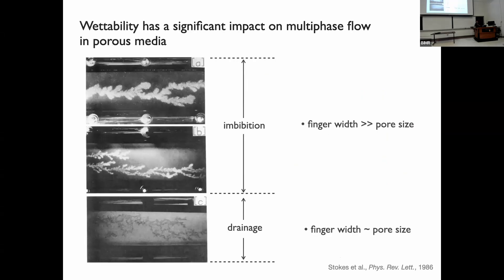Classical studies on the impact of wettability on multiphase flow in porous media have shown that wettability plays a major role. Specifically, in a classic paper by Stokes et al., published in Physical Review Letters in 1986, they showed that going from drainage to imbibition, the displacement pattern broadens. In the top image, the invading wetting fluid produces fingers much wider than a typical pore size, whereas in the bottom image, the non-wetting invading fluid produces fingers on the order of the pore size — simply changing wettability gives dramatically different patterns.